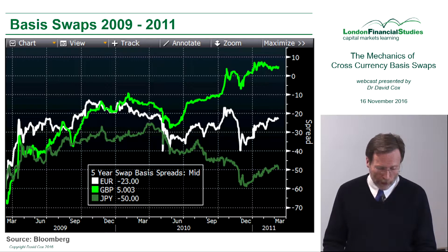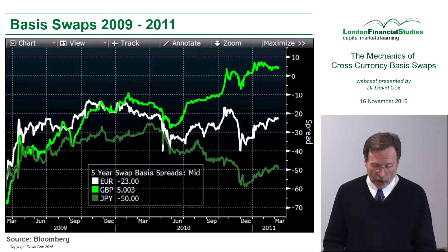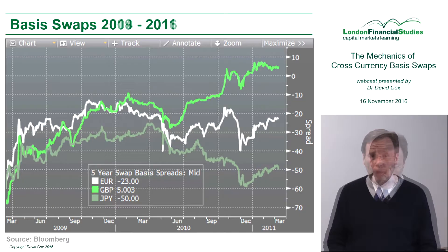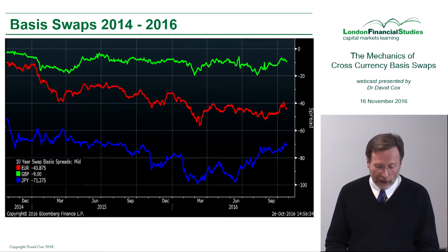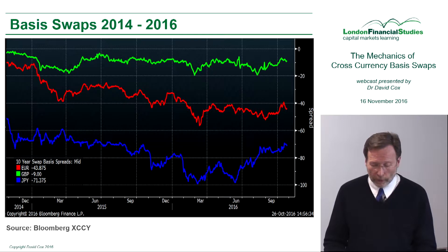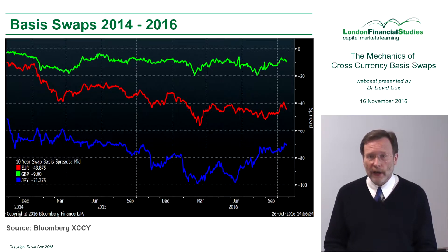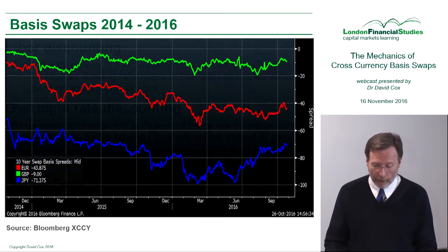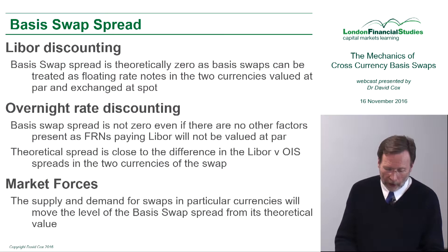Starting from March 2009, the lines on the chart here reflect yen, euros, and sterling. If we think about how these have evolved up to the present time, you can see that the basis swap spreads in a lot of currencies remain negative — sterling, the bright green line at the top, is still pretty clear.